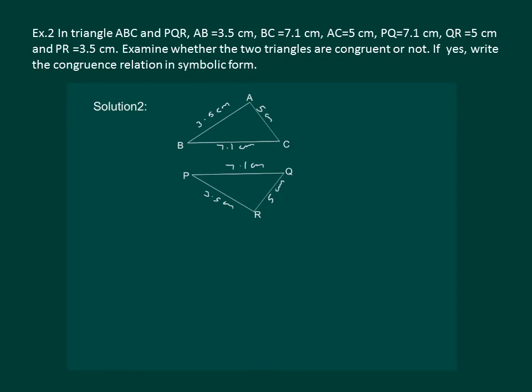Let us read the question. In triangle ABC and PQR, AB equal to 3.5 cm, BC equal to 7.1 cm, AC equal to 5 cm, PQ equal to 7.1 cm, QR equal to 5 cm, and PR equal to 3.5 cm.